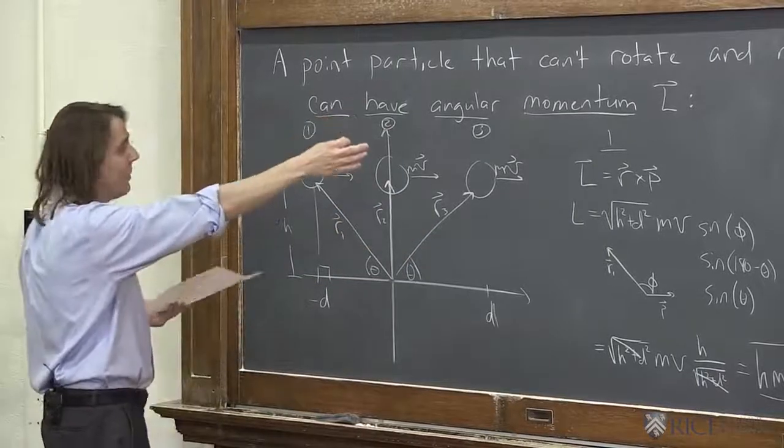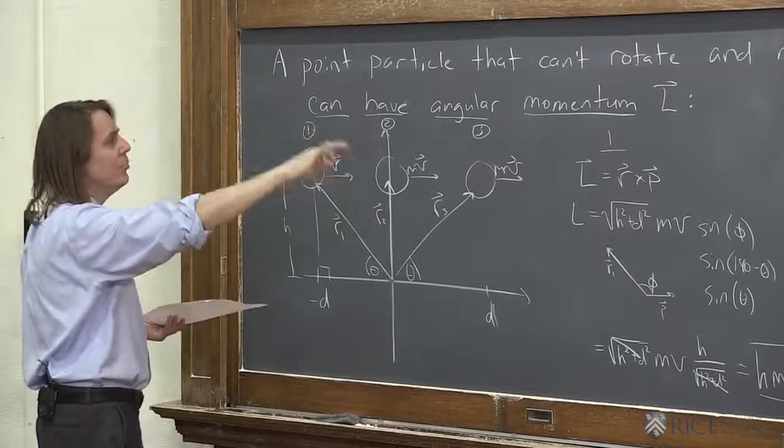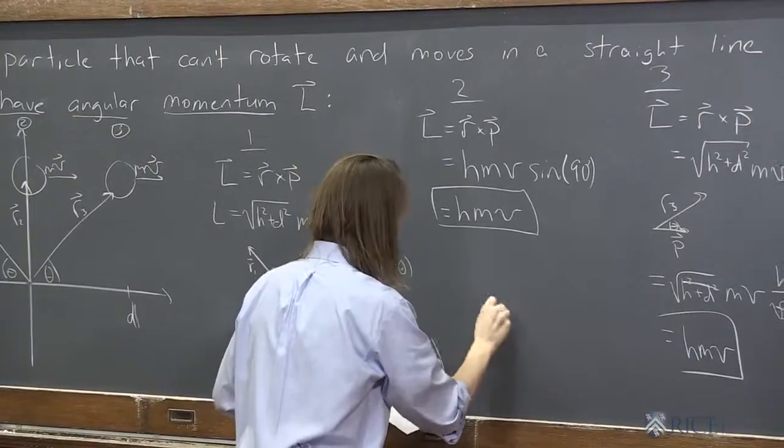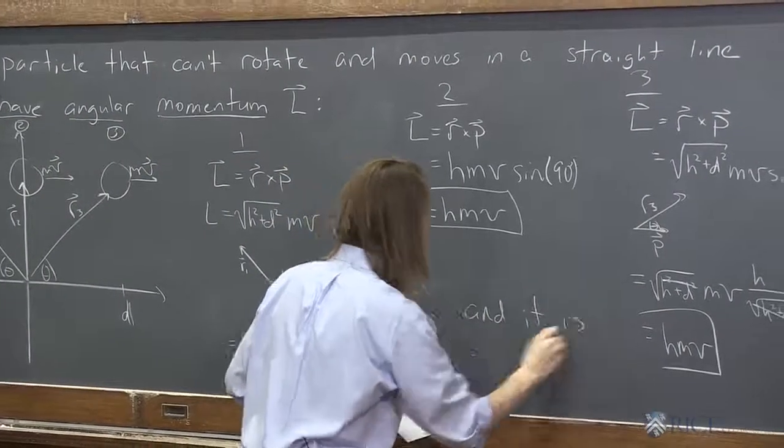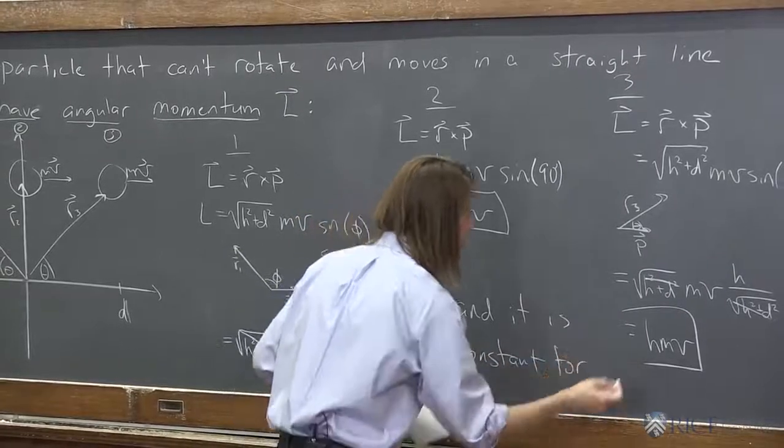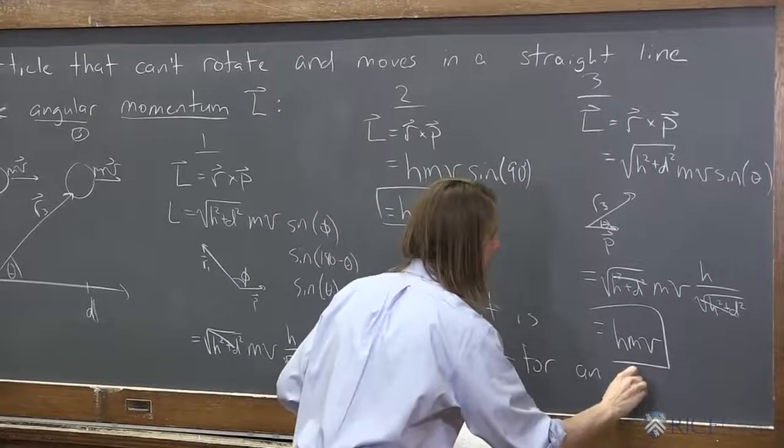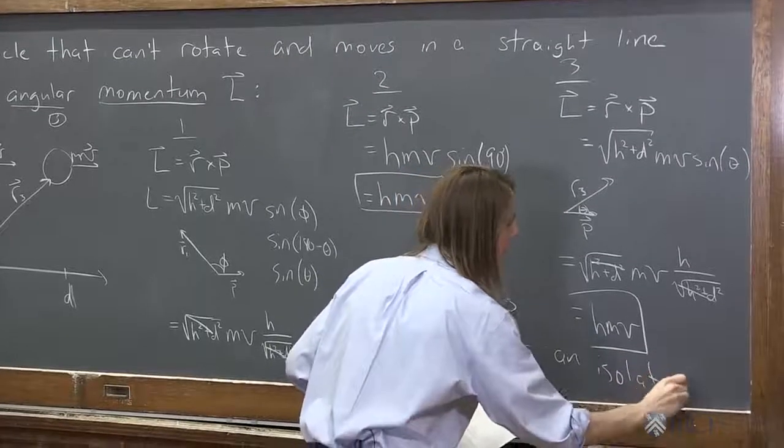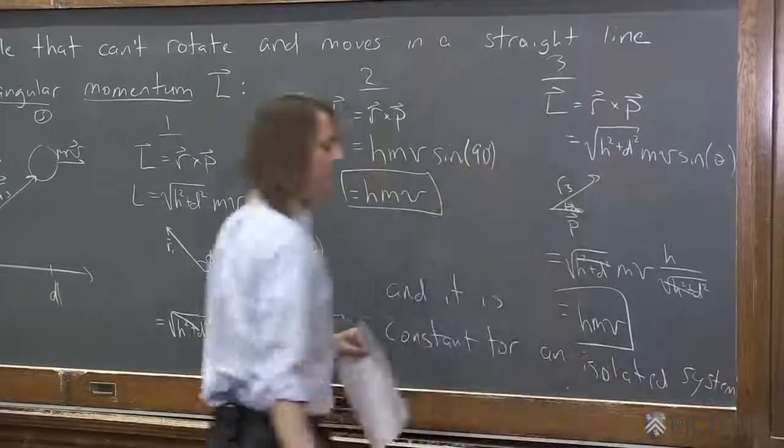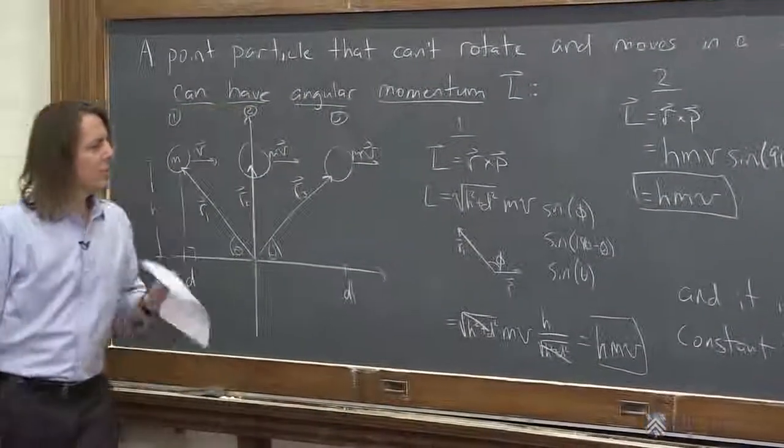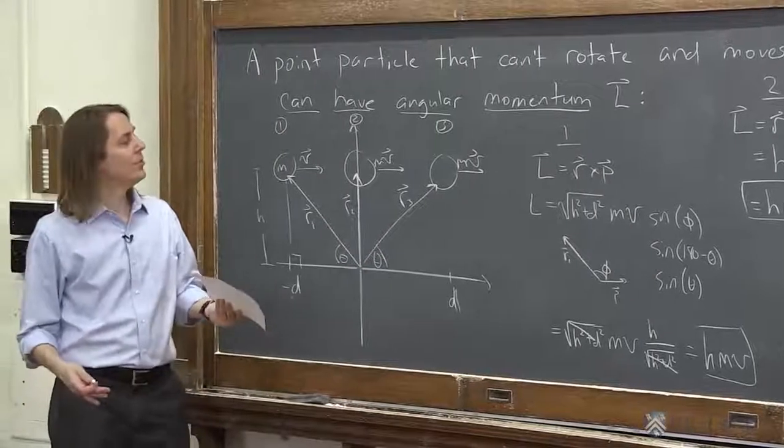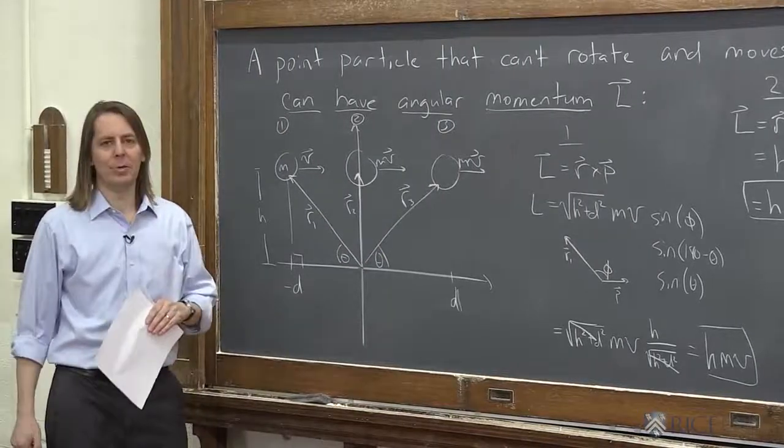So at all three positions, it has the same angular momentum. So a point particle, or just a mass, it's not rotating. Moving in a straight line can have angular momentum L. And it is constant for an isolated system, of course. If you had a force on it, it might not be. So not only can we define angular momentum this way, it seems to follow the rules. It seems to be conserved for something just moving along and not being pushed.